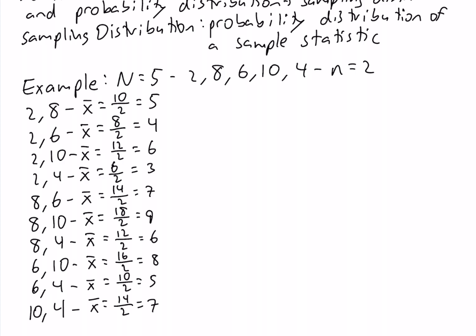So we have 10 different sample means corresponding to the 10 different samples. If we select the sample so that it's a simple random sample, that means each sample has the same probability of being selected. With 10 samples, the probability of each sample is 1 over 10, or 0.1.